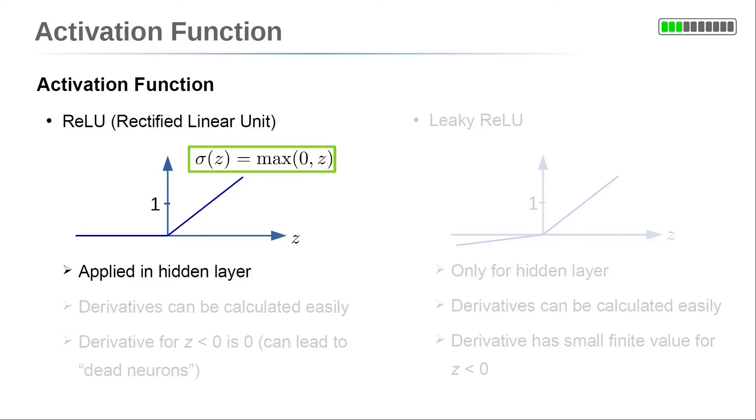Typically, this function is used in hidden layers of neural networks. A major advantage over the previous activation functions is that ReLU is easy to calculate. This is because it is composed of two simple functions, a constant and a linear one. However,